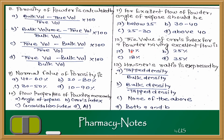Question 13: Hausner's ratio is expressed by which formula? Hausner's ratio is a method to determine the flow property of powder. Its formula is tapped density upon bulk density, where tapped density is mass upon true volume and bulk density is mass upon original volume.